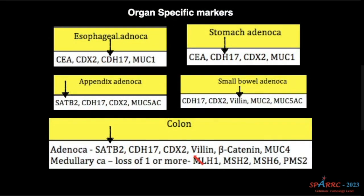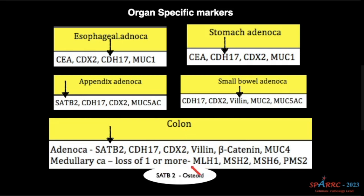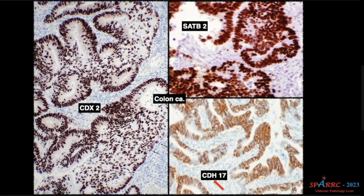Coming to the esophagus, it is CDH17. For stomach also CDH17 — both are adenocarcinomas. Squamous cell carcinoma of the esophagus will be positive again for P40. For appendix and colon, SATB2 — will be nicely positive in the nucleus. For small bowel, it is villin, but you all know small bowel adenocarcinoma is very, very rare. And please remember that SATB2 will be positive in osteoid and osteosarcoma also — SATB2 is positive in osteoblast and osteoid-producing lesions.